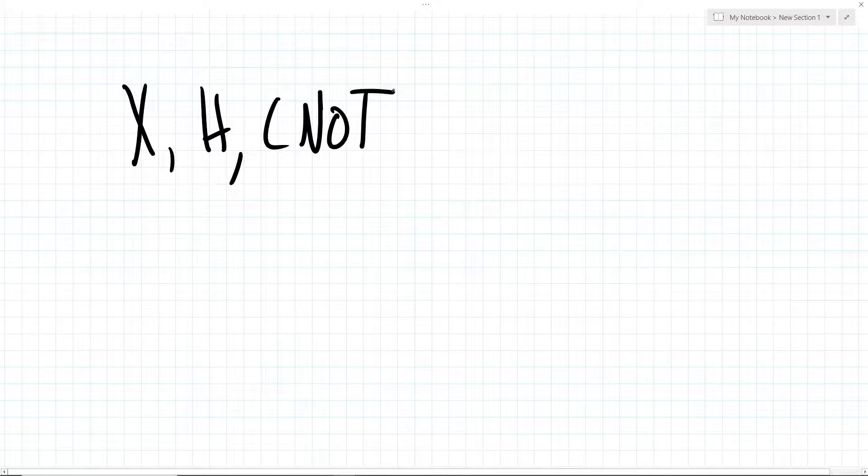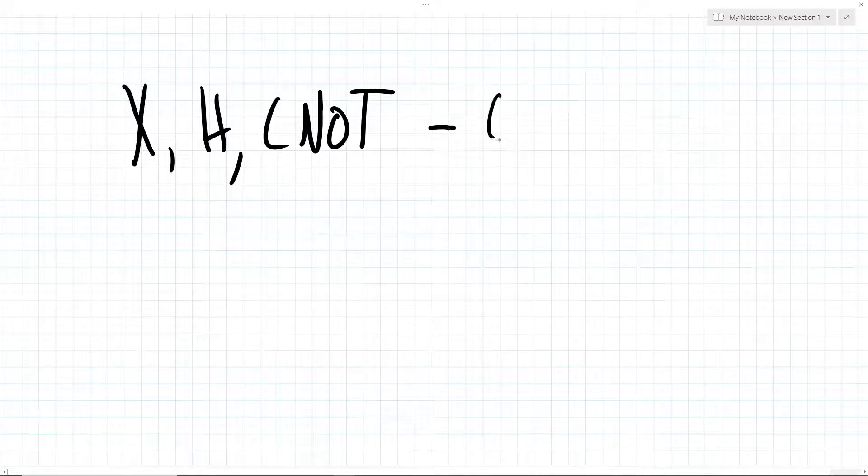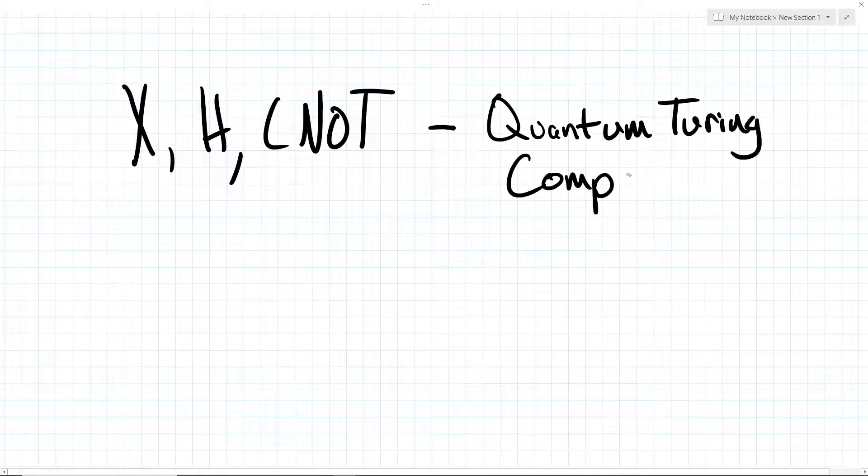Combining the three gates that I just described, it becomes possible to create any unitary matrix operation. In a sense, you can think of these gates as being quantum Turing complete. However, there are many more gates which are commonly discussed. I want to introduce a couple more really common ones.